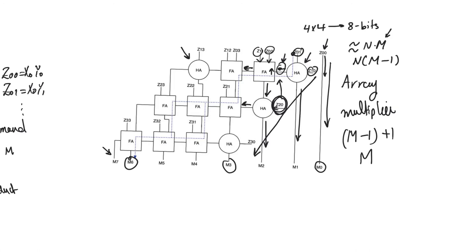We must be careful because there are multiple paths from the start to the end of the critical path. For example, the path through all the half adders and then the bottom row of full adders is not the critical path, because half adder delays are much smaller than full adder delays, and there are full adders in parallel that provide a longer path. The critical path must pass through the largest number of full adders possible.